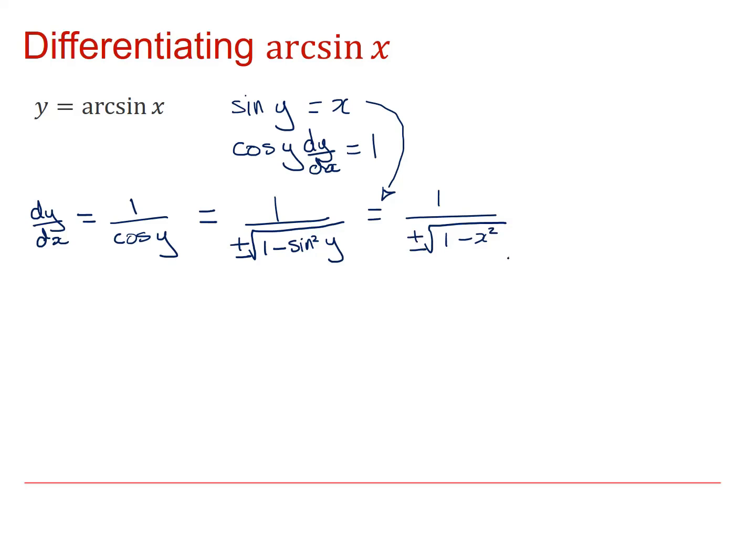Again, with a plus or minus. Now, if you think back to the graph, we saw that dy/dx is always greater than or equal to zero. Which means that this thing here must always be positive, and so I can remove the negative square root. I'm only interested in positive values for dy/dx.